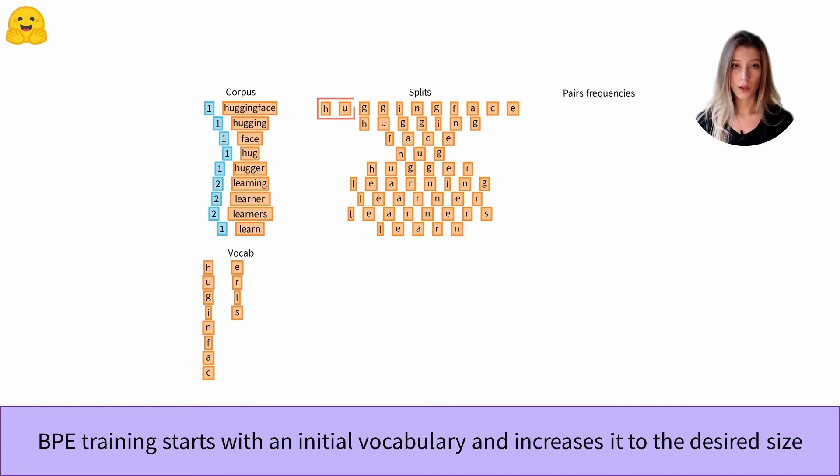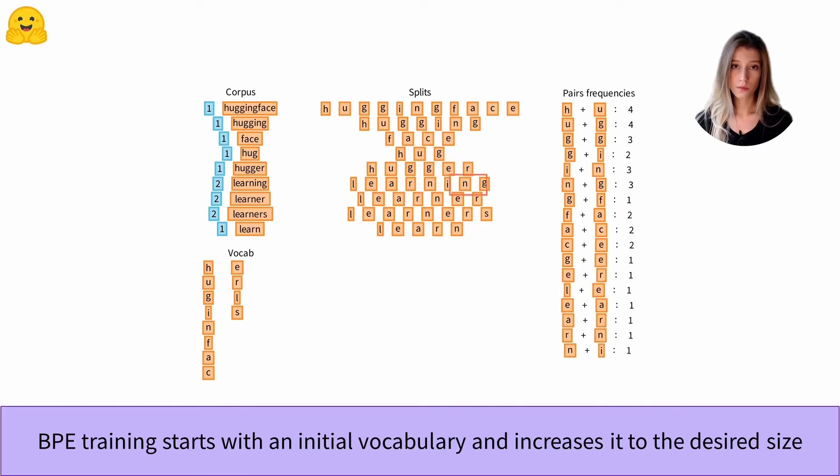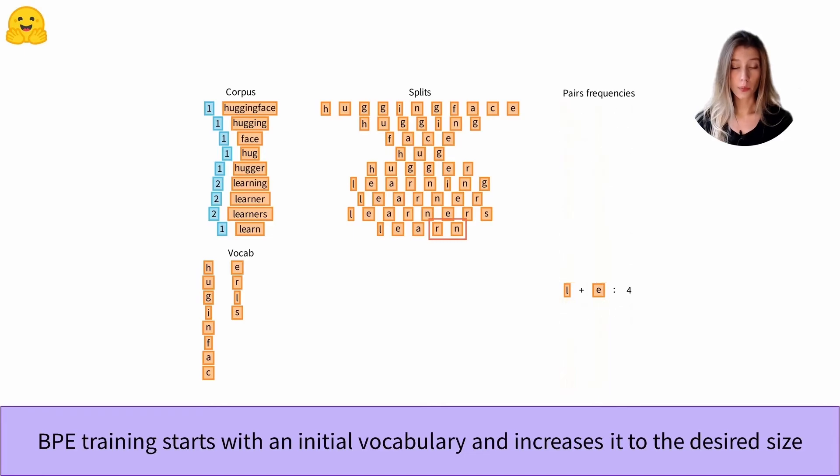The first pair is composed of the tokens h and u, the second u and g, and we continue like this until we have the complete list. Once we know all the pairs and their frequency of appearance, we will choose the one that appears the most frequently. Here it is a pair composed of the letters l and e.